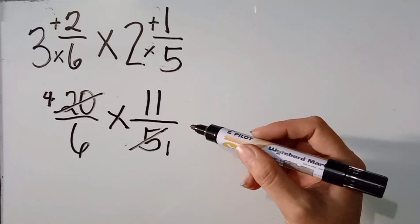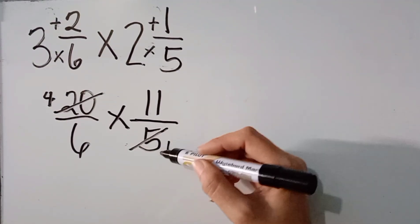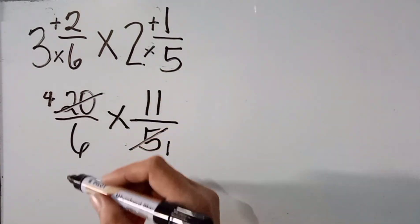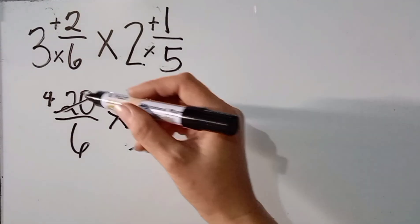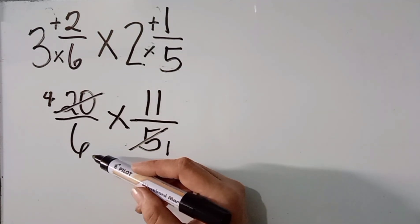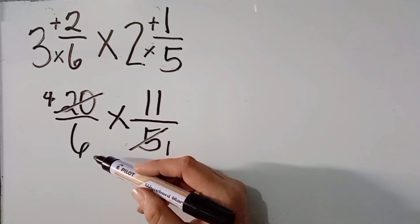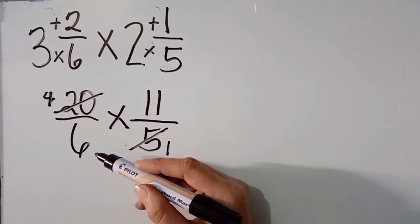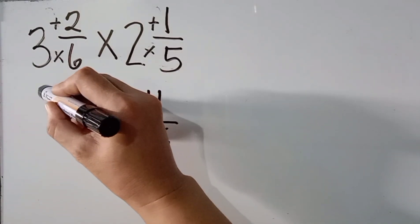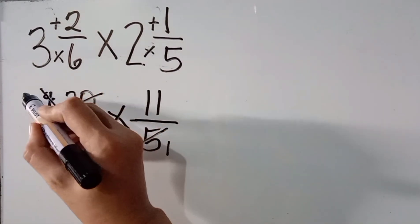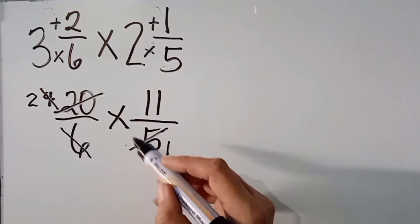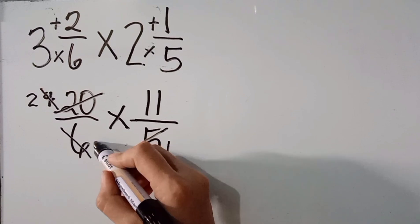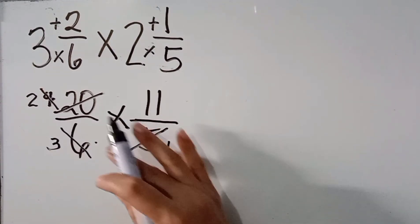Now, meron pa bang may common factor vertically and diagonally? 11 over 1? Wala po. 4 over 6 po? May common factor kaya? Yes po, may common factor sila na 2. So, i-divide natin sila sa kanilang common factor na 2. 4 divided by 2, the answer is 2. 6 divided by 2, the answer is 3. Dito doon natin siya ilagay.